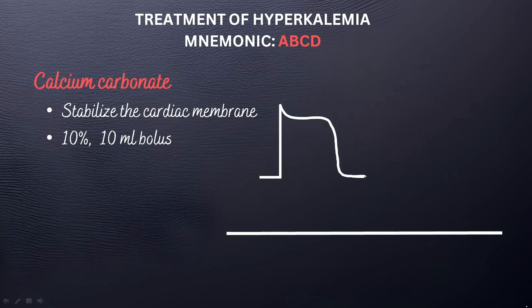It doesn't really matter which exams you are writing. If there is a patient with severe hyperkalemia and you are asked what is the initial treatment of choice, your answer is going to be to use calcium carbonate or calcium gluconate to stabilize the cardiac membrane before any other intervention. 10% 10ml bolus, which may be repeated in 5 minutes, depending on the trace on the ECG. You must do well to inform the renal team as well as the intensive care team.